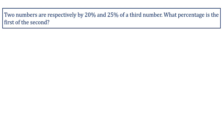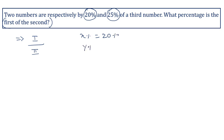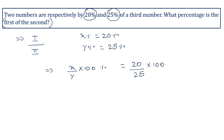Two numbers are respectively 20 percent and 25 percent of a third number. What percentage is the first of the second? We have to find what percentage is first of the second, so put the value of first in the numerator and second in the denominator. The two given numbers are x percent equal to 20 percent and y percent equal to 25 percent. Using the formula x upon y into 100 percent: 20 upon 25 into 100 percent gives 80 percent. So 80 percent is the first of the second.